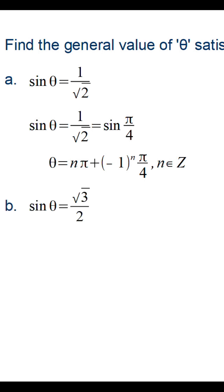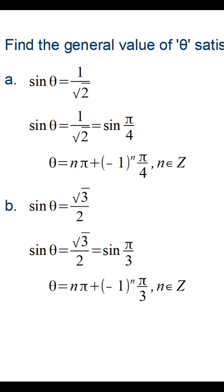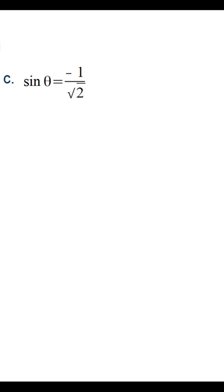Sine theta is equal to root 3 by 2. Sine pi by 3 is equal to root 3 by 2. We get theta is equal to n pi plus minus 1 raise to n, pi by 3.